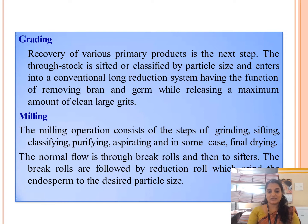The milling operation consists of the steps of grinding, sifting, classifying, purifying, and aspirating — and in some cases, final drying. The normal flow is through brake rolls and then to a sifter. The brake rolls grind the corn, which then goes to the sifter for sieving. Brake rolls are followed by reduction rolls, which reduce the endosperm to the desired particle size.